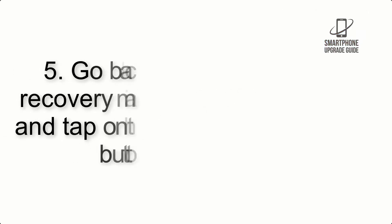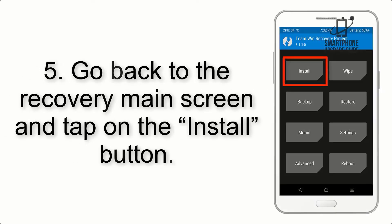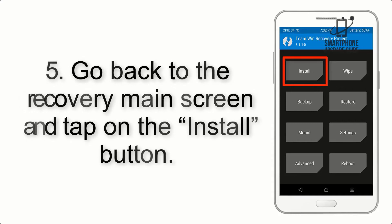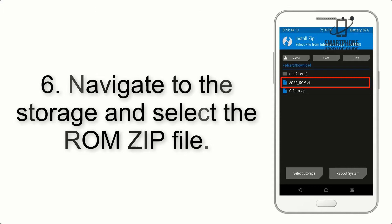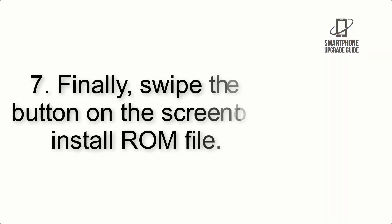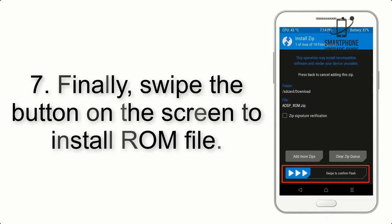Step 4: Swipe the button to wipe the device. Step 5: Go back to the recovery main screen and tap on the Install button. Step 6: Navigate to the storage and select the ROM zip file. Step 7: Swipe the button on the screen to install the ROM file.